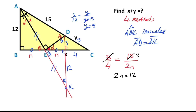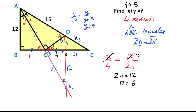If you simplify the expression, 2n equals 12, that means n equals 6. Therefore x equals 10 and y equals 5. So the sum of x and y equals 15 units.